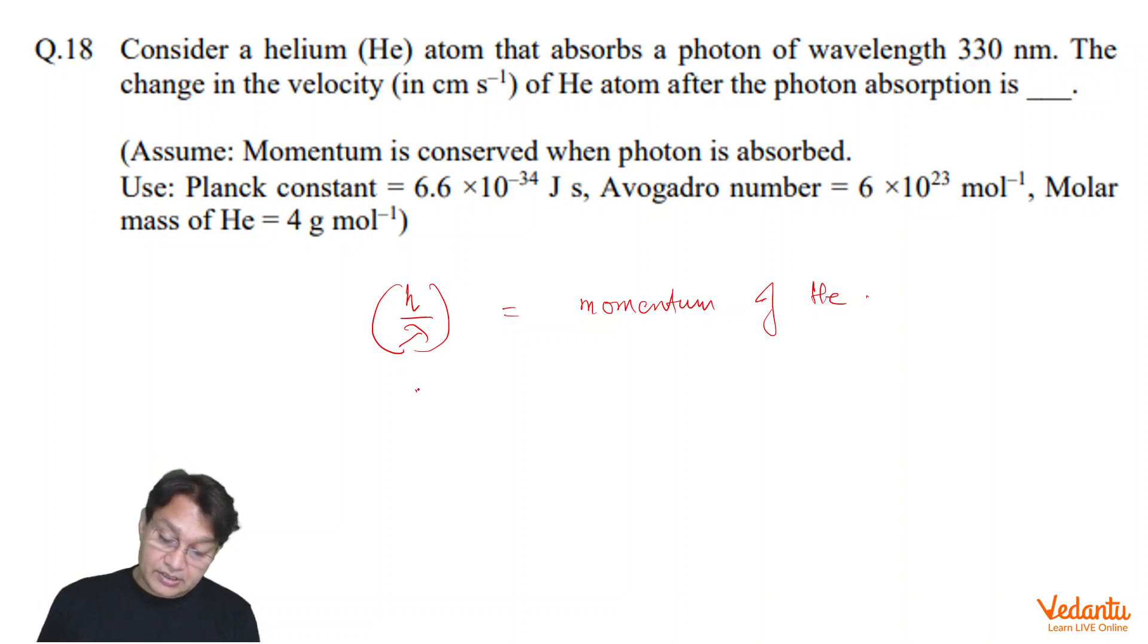The simplest approach is that h by lambda is equals to mass of the helium atom into velocity. Your answer will be v is equals to h upon lambda into m.